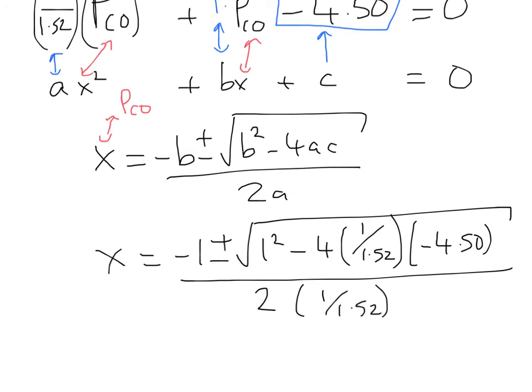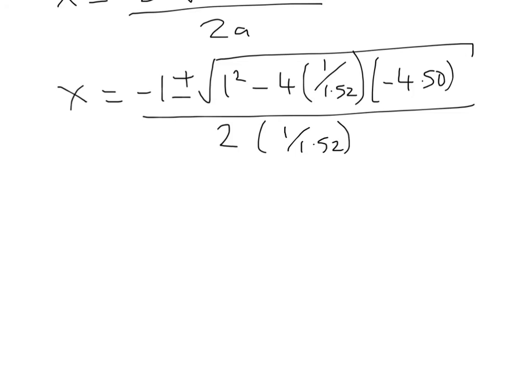And so that's going to give us a rather meaty expression for X, right? And so we can go ahead and write this as minus 1, plus or minus 3.583, all divided by 1.316. And that gives us two values, 1.963, or the other value is minus 3.483.